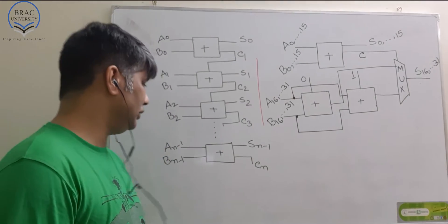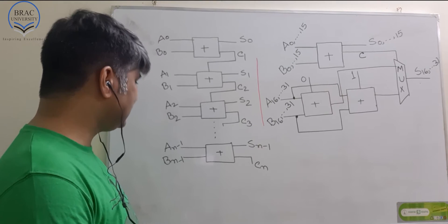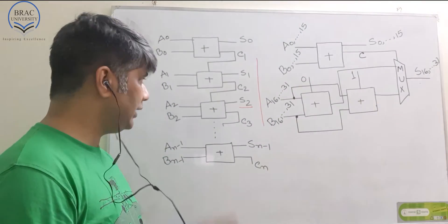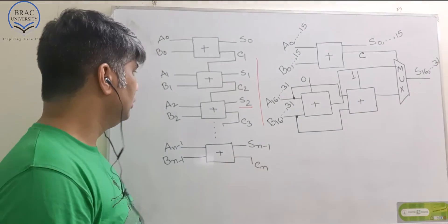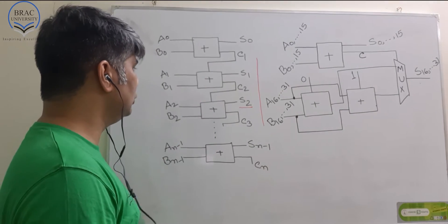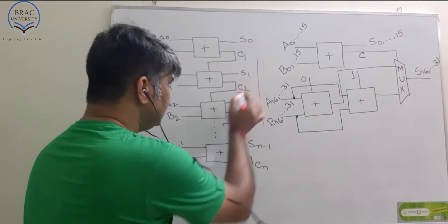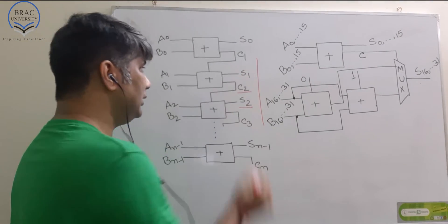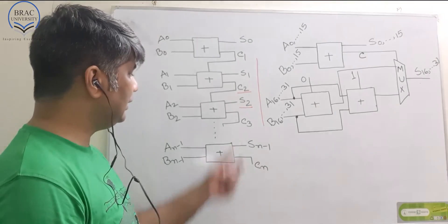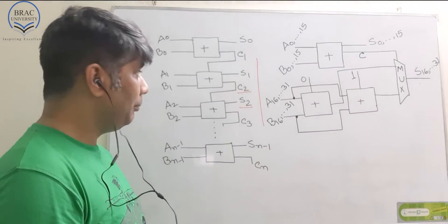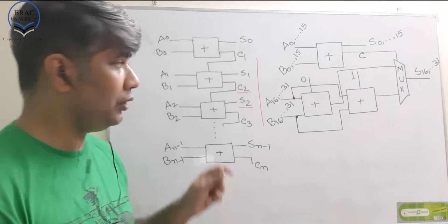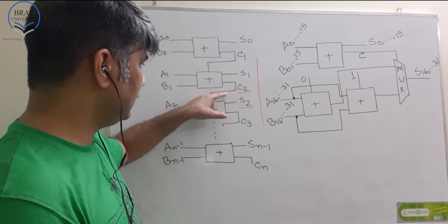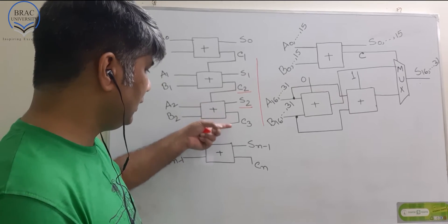See the scenario. For example, for S2 to generate the output, this adder needs to wait for the carry C2. When S1 is generated, then carry C2 can be generated, but this adder needs to wait for this carry. This adder waits for this carry, this adder waits for this carry, the following adder waits for this one and so on.